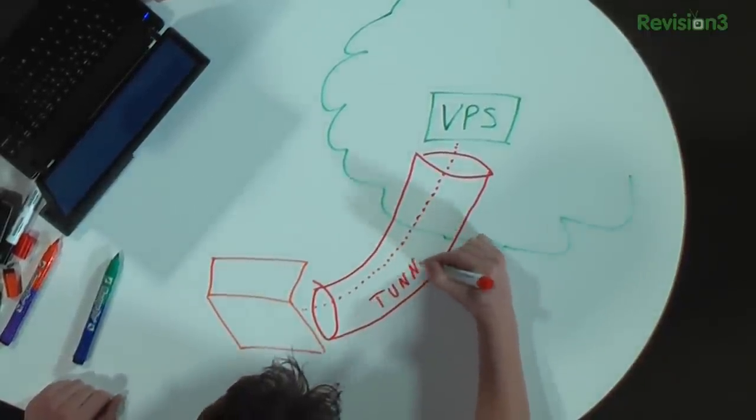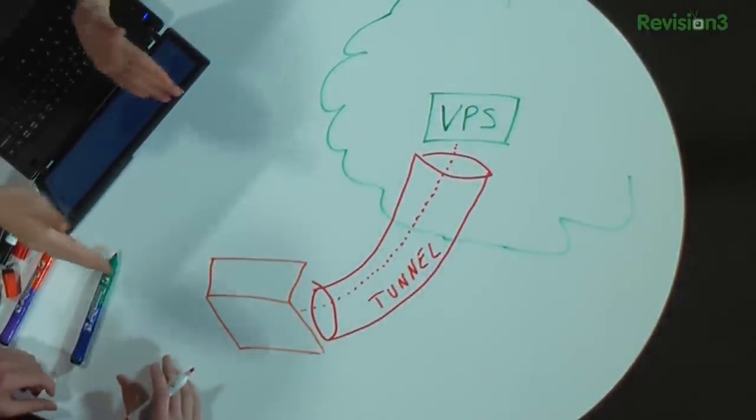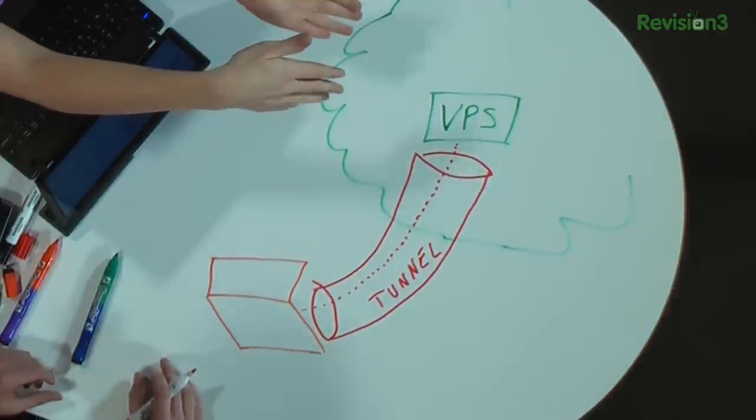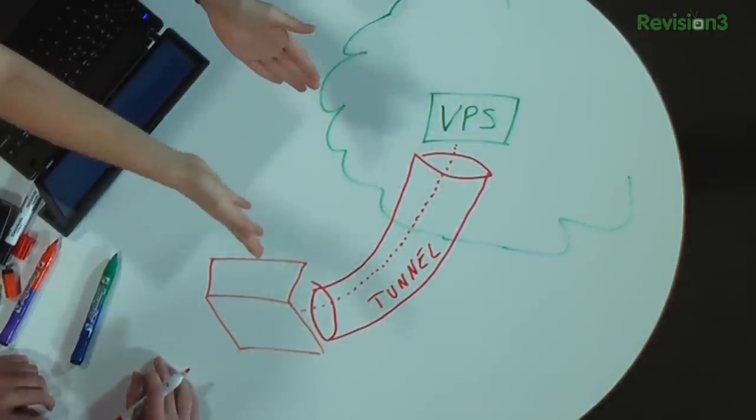So I'm basically connecting from my computer through a secure tunnel to the VPS, and then the VPS is connecting me to the internet. Right. With SSH and PuTTY, you would normally just type in that host name or IP address, as well as port 22 by default. Then you'd click okay, log in, and you'd be all set.